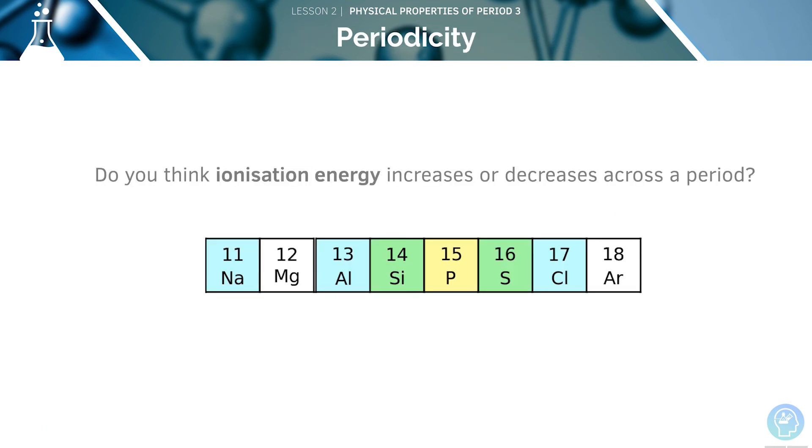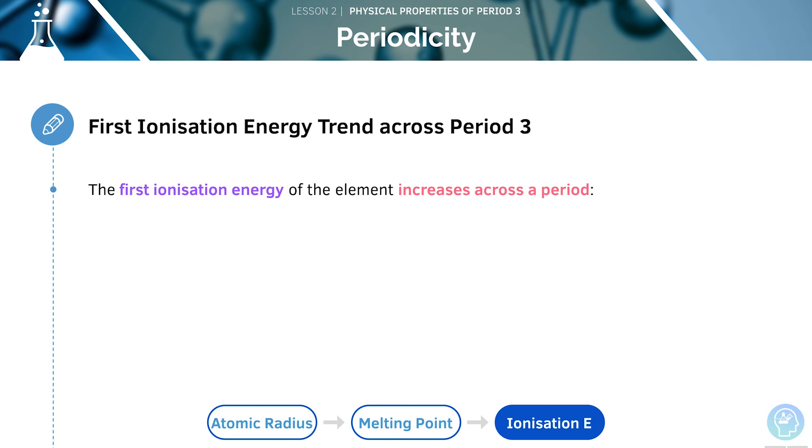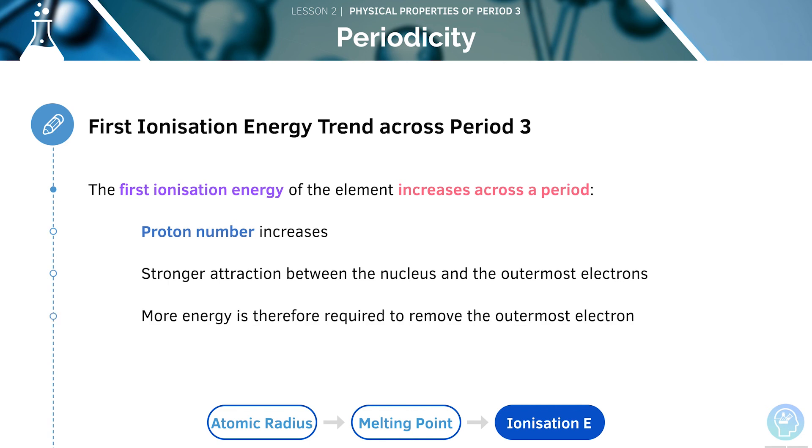Do you think the ionisation energy increases or decreases across a period? It will increase. The first ionisation energy of an element will always increase across a period. As you move across the period, the number of protons is going to increase and therefore the attraction between the nucleus and the outermost electrons will also increase. More energy is therefore required to remove the outermost electron, meaning that the first ionisation energy will increase.